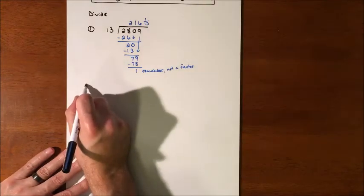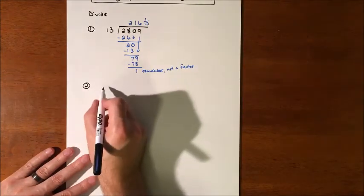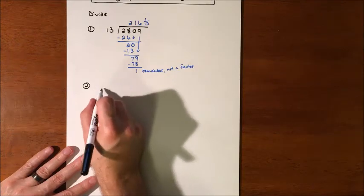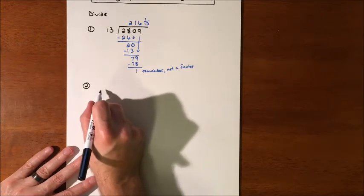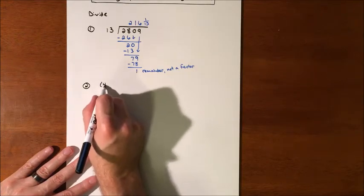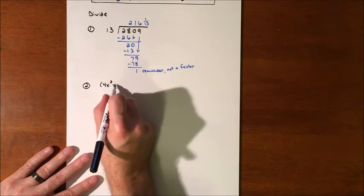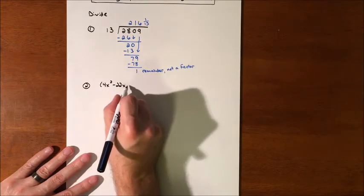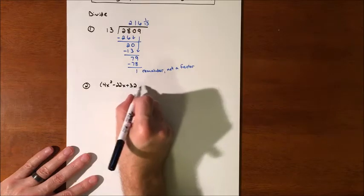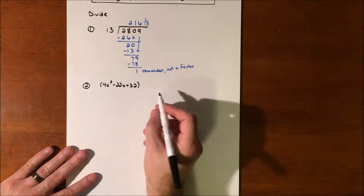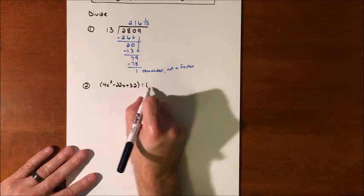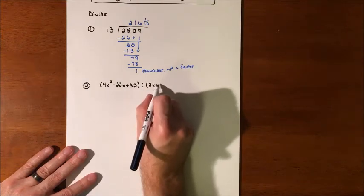Here's what ours is going to look like. We're going to take 4x² minus 22x plus 32. We're going to take that quadratic, that trinomial, and divide it by 2x plus 3.